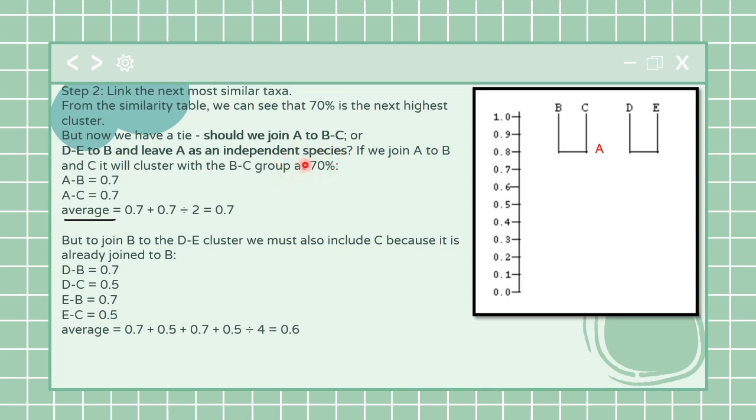If we join A to B and C it will cluster at 70 percent - A to B is 70, A to C is 70, and when we take the average it is again 70. But if we had the choice to join B to D and E cluster we must include C also because B and C are linked together.